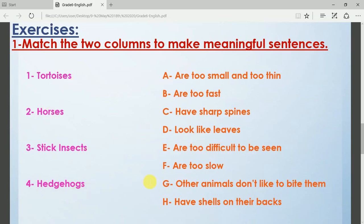Tortoises, horses, stick insects, hedgehogs. Now all you have to do is to match: are too small and too thin, are too fast, have sharp spines, look like leaves.